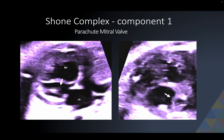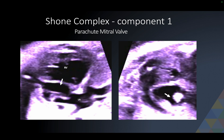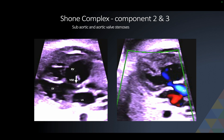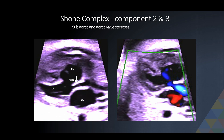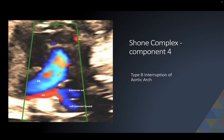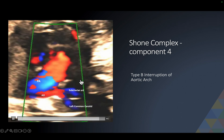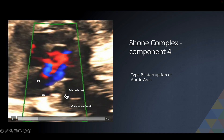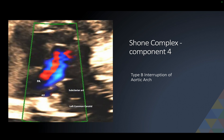You see a parachute valve shown by an arrow, and then the single papillary muscle confirming that this is a parachute mitral valve. Then you see a sub-aortic stenosis. Apart from the VSD, you see a sub-aortic stenosis as the third component. You also see the aortic valve, which is thickened and doming. The fifth component of Shone complex is interruption of the aortic arch — the aorta rather than continuing normally is filling retrogradely from the pulmonary artery, becoming a subclavian artery and a left common carotid. So this is a type B interruption of the aortic arch completing the Shone complex.